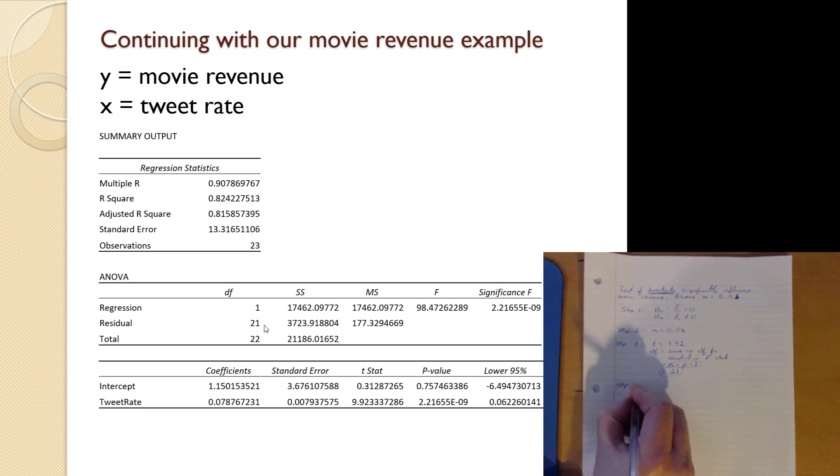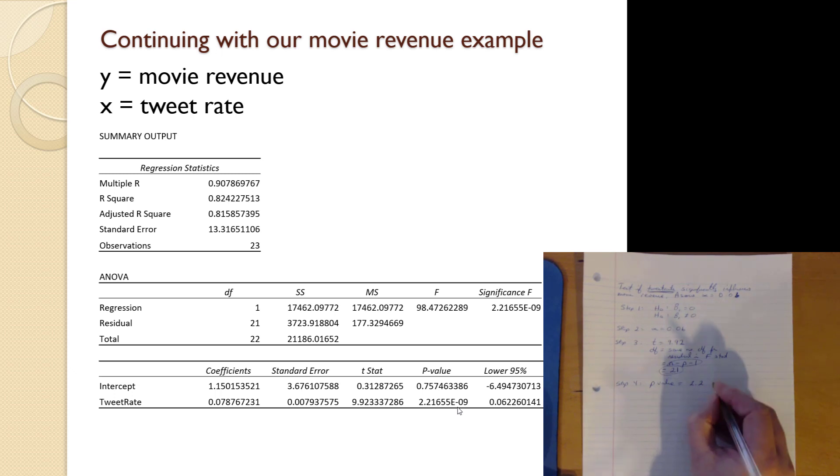Step 4 is the P value, which we go along. And for us here, it's conveniently called the P value. Go figure why. And we see that the P value equals 2.2 times 10 to the minus 9. Step 5 is like step 5 always is. That P value, of course, very small, less than alpha. Therefore, we reject H naught. Very small probability of the type 1 error by rejecting H naught in this case. With a specific alpha, 0.06.